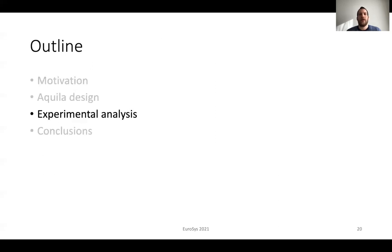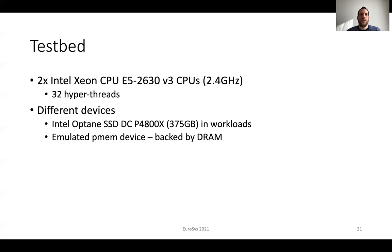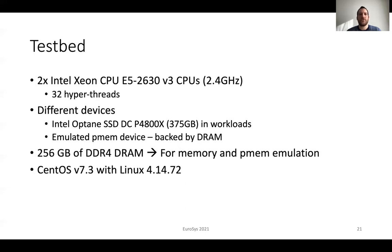Next I'm going to talk about our experimental analysis. As a testbed we use a server with two Intel Xeon processors at 2.4 GHz, summing to 32 hyperthreads. We also use two different types of devices: an Intel Optane SSD and a PMEM device backed by DRAM to emulate a next-generation fast storage device. Our server contains 256 GB of DRAM, both for memory and PMEM emulation, and runs CentOS 7.3 with Linux 4.14.